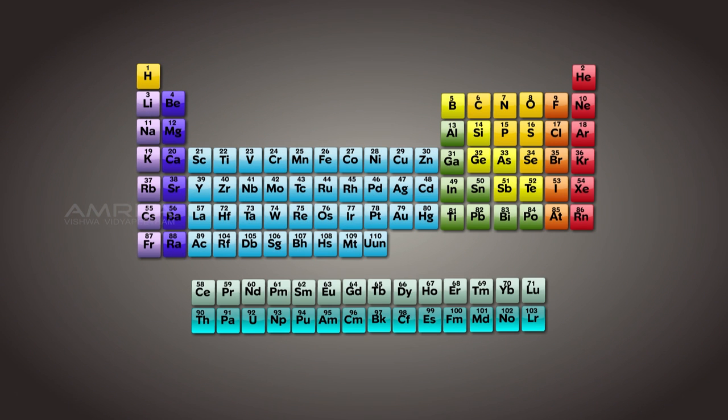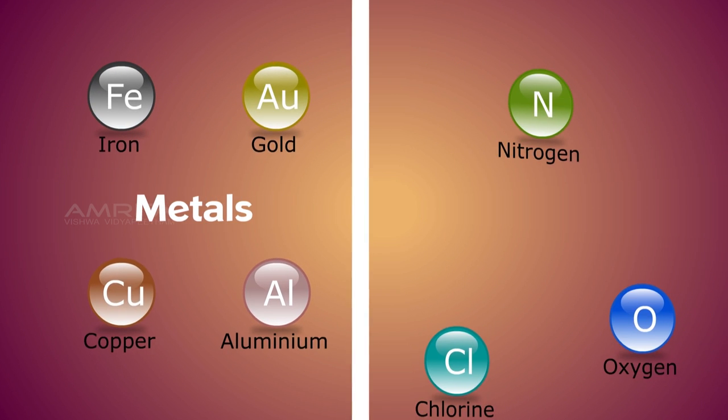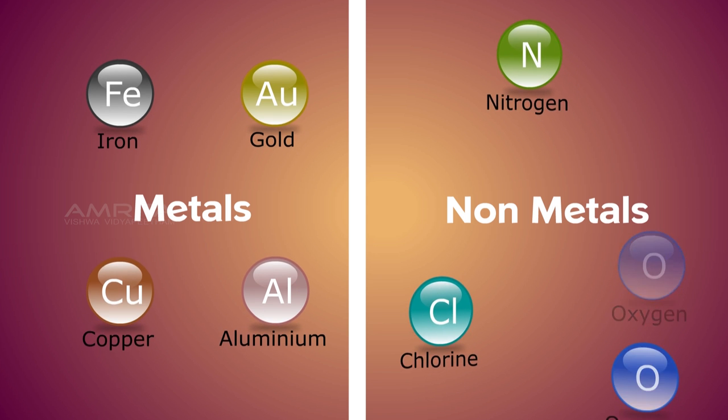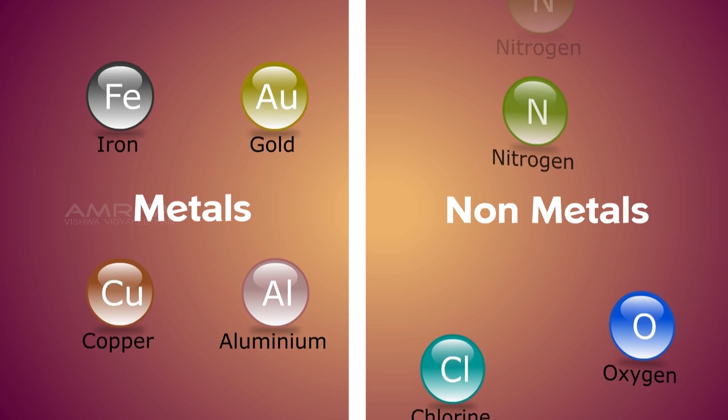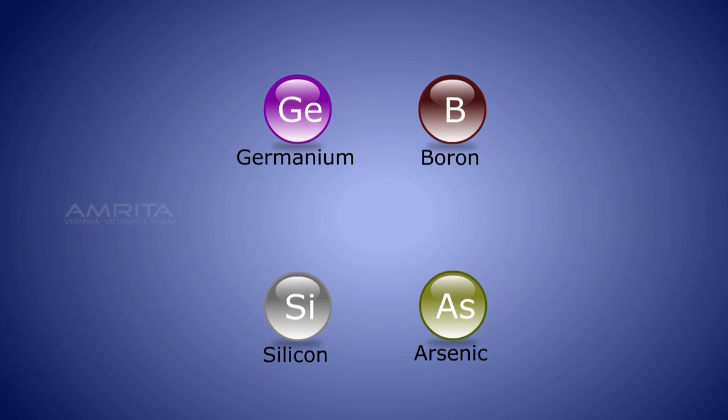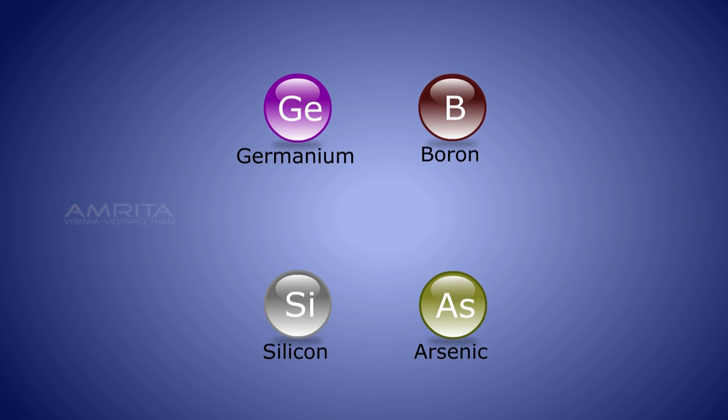Different elements are arranged in the periodic table according to their atomic number. Elements can be classified as metals and nonmetals, and they exist as atoms or molecules. There are some elements which behave like metals and nonmetals, which are called metalloids.